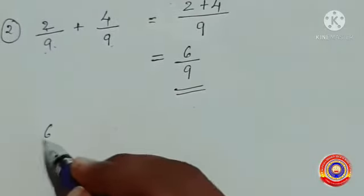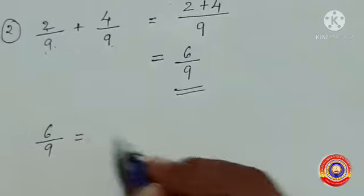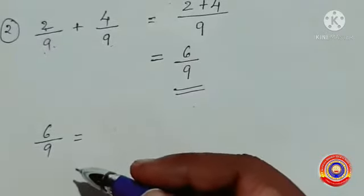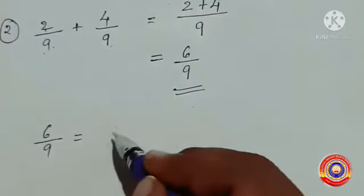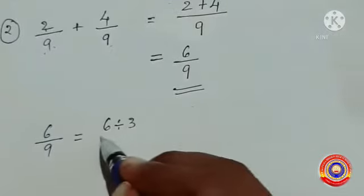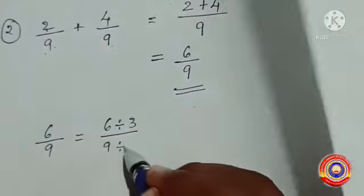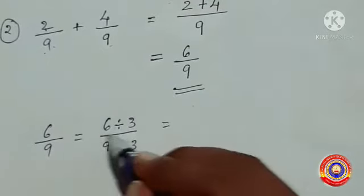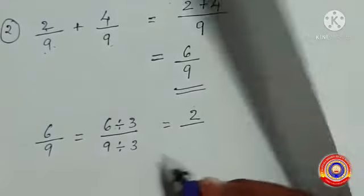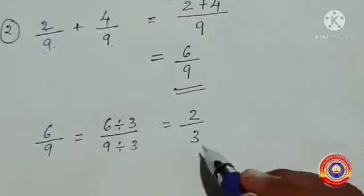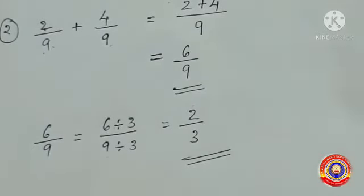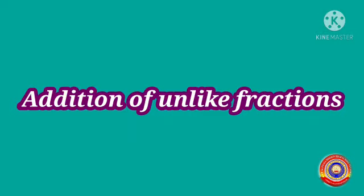For finding the lowest form of 6 by 9, we have to divide the numerator and denominator by the same number. 6 and 9 are divisible by 3. Then 6 divided by 3 is equal to 2, and 9 divided by 3 is equal to 3. Then 6 by 9 is equal to 2 by 3. Is it clear for you?